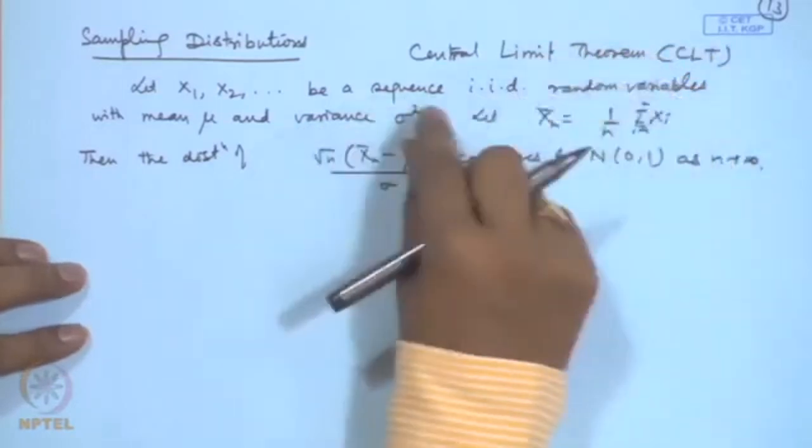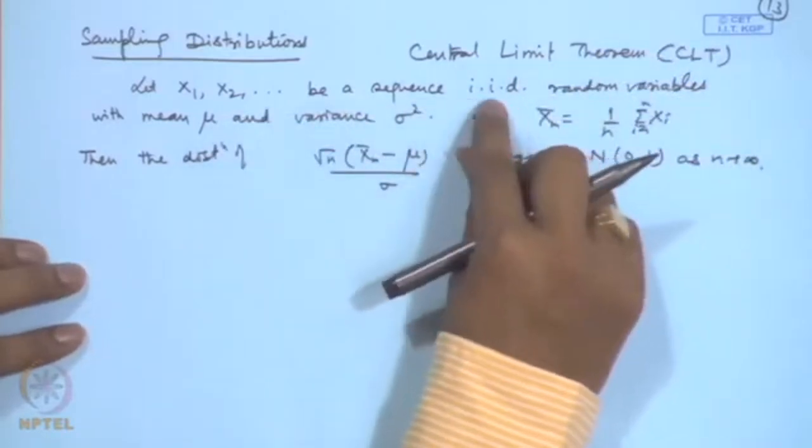This result has further generalizations — for independent but non-identically distributed random variables, or even non-independent ones. Under certain conditions the distribution of the sample mean or sum can still be approximated by a standard normal. The sampling distribution refers to the distribution of any characteristic (mean, variance, etc.) computed from several observations from the same population.